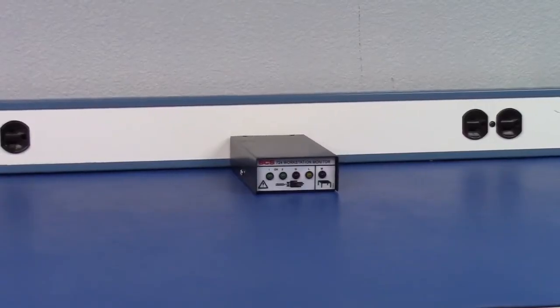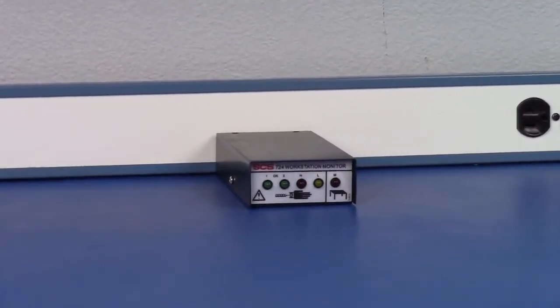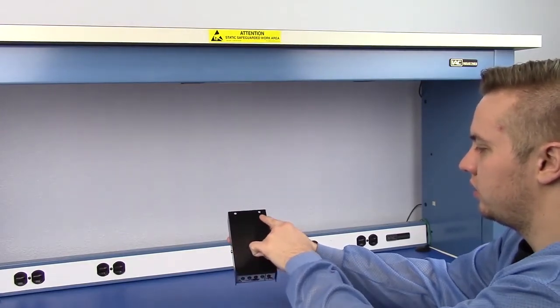The monitor's enclosure is constructed of steel and often mounted on top of a workbench. Mounting holes and screws are included for installations at operator eye level.